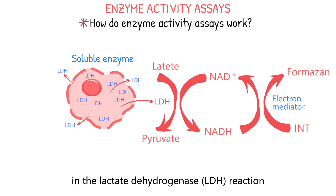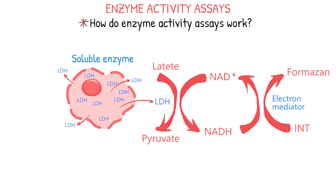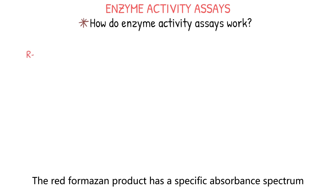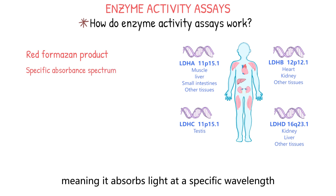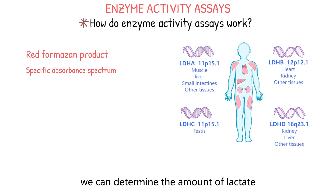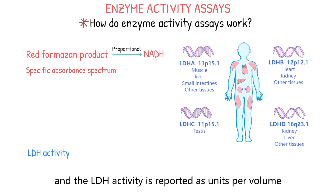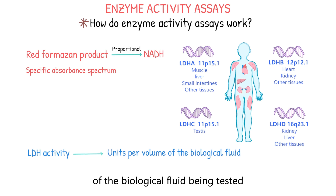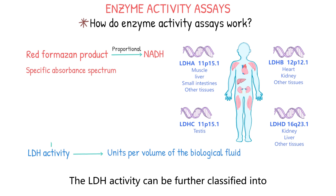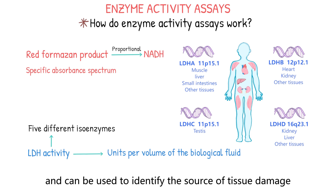In summary, in the lactate dehydrogenase reaction, lactate is oxidized to pyruvate, and at the same time NAD+ is reduced to NADH. This reaction can be represented by the following chemical equation: Lactate + NAD+ → Pyruvate + NADH + H+. The red formazin product has a specific absorbance spectrum, meaning it absorbs light at a specific wavelength. By measuring the absorbance of the red formazin product at this specific wavelength, we can determine the amount of lactate present in the sample, as it is proportional to the amount of NADH produced during the LDH reaction. The LDH activity is reported as units per volume of the biological fluid being tested. The LDH activity can be further classified into five different isoenzymes, each of which has a specific tissue distribution and can be used to identify the source of tissue damage or disease.